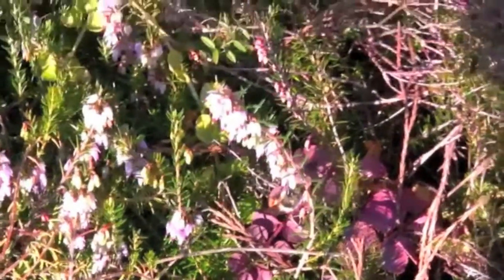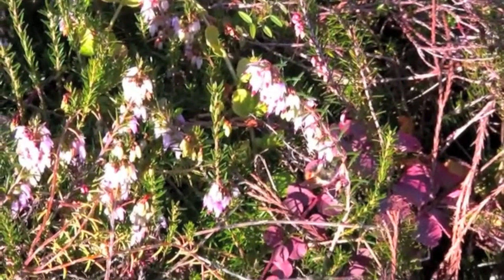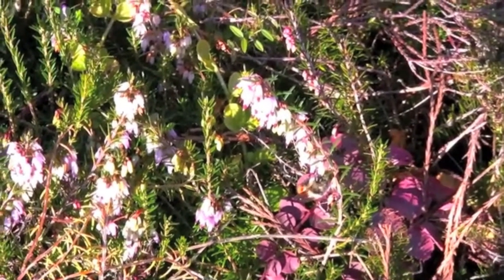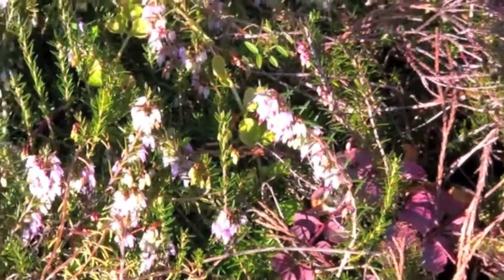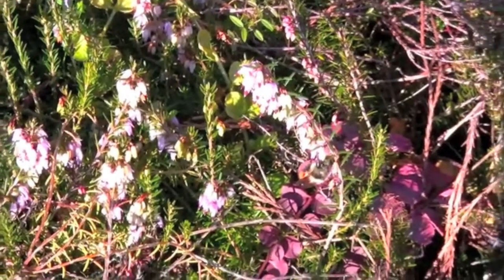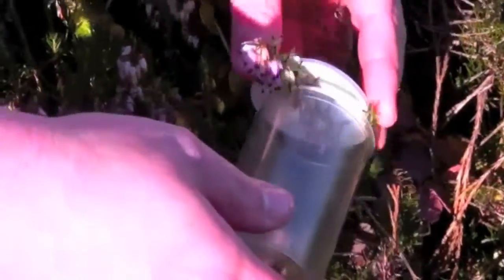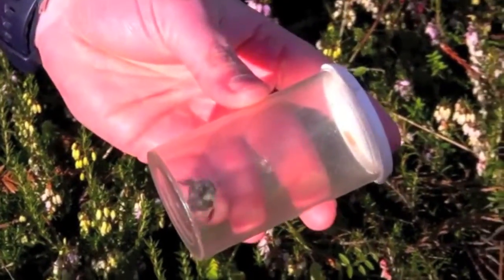To capture a queen using the container method, all you need to do is have a container that has a removable lid, and then you want to locate a queen, as you can see here, and basically you just want to come down very gently and put the container over the top of your queen. The queen will fly into the container, as you can see. Now you've successfully caught your first bumblebee queen.